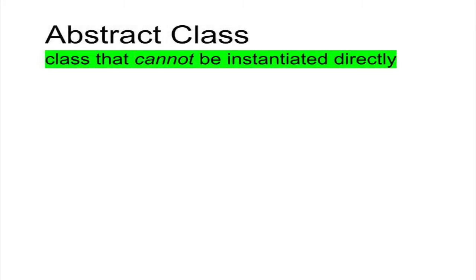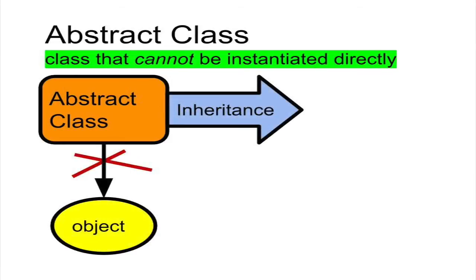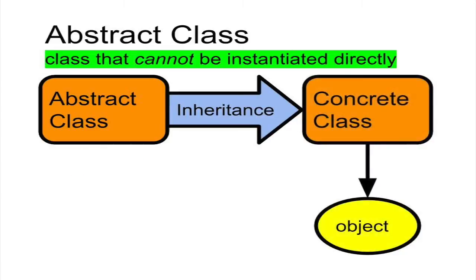An abstract class is a class that cannot be instantiated as itself. Instead, it serves as a base class from which more concrete classes inherit their attributes and behaviors.